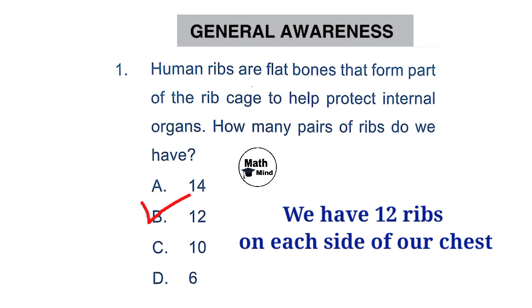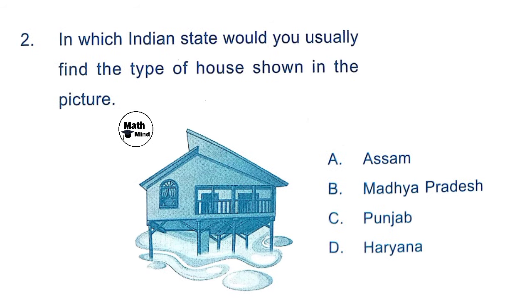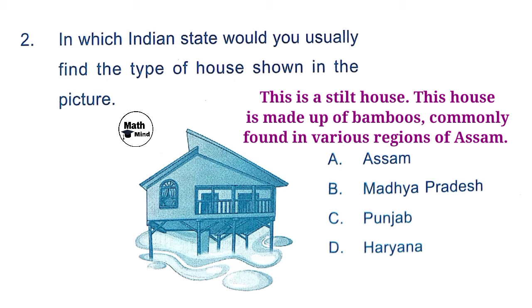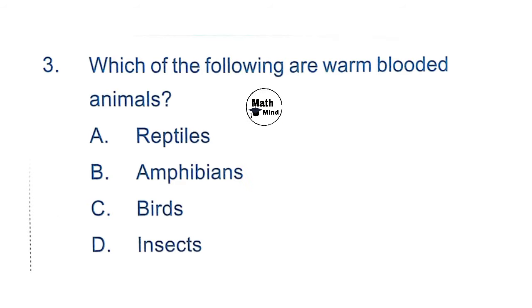Question 2: In which Indian state would you usually find the type of house shown in the picture? This is a stilt house. These are made of bamboo and commonly found in various regions of Assam, especially in flood-prone areas. So option A is correct: Assam.